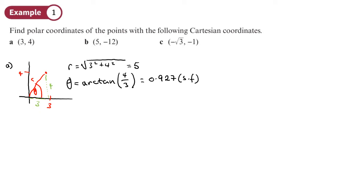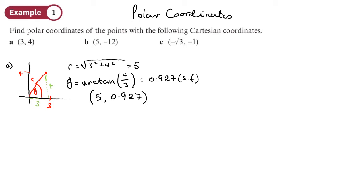We write polar coordinates almost like Cartesian coordinates — r goes first and theta goes second, written as (r, θ). Now for part b, we have the Cartesian point (5, −12), so again we're going to do a sketch.